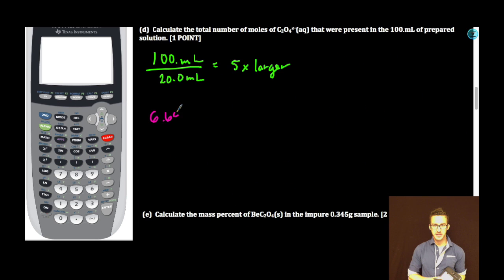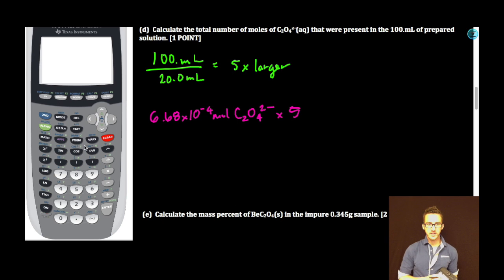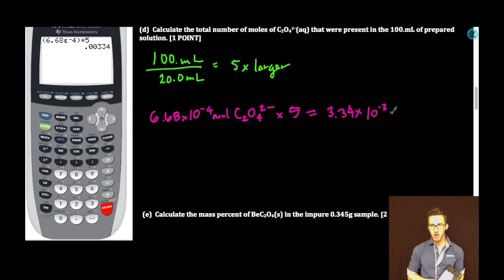All we need to do is multiply that by five. 6.68 times 10 to the minus 4 times 5. In the original 100 mL sample, we have 3.34 times 10 to the minus 3 moles of oxalate ion.